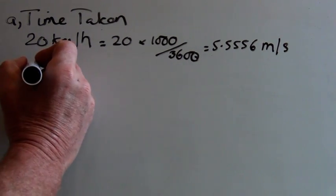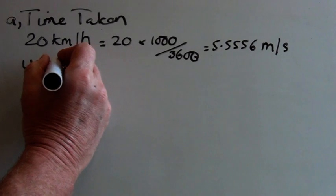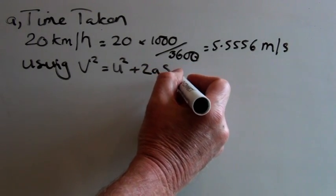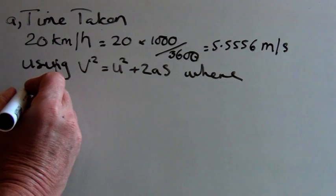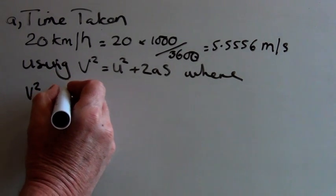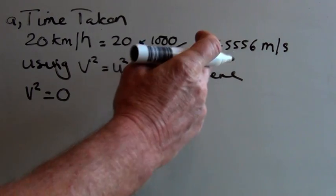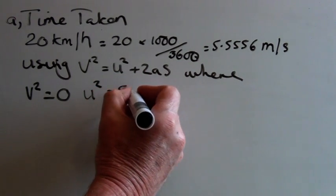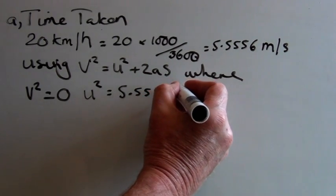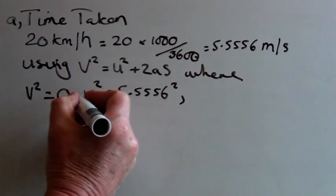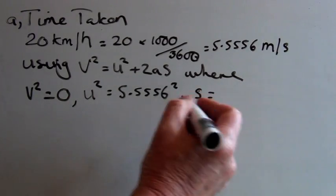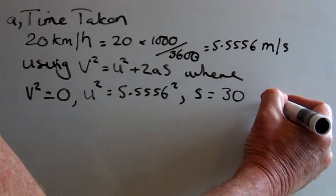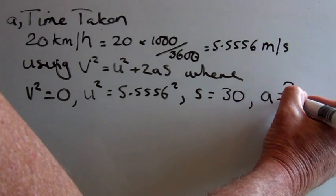Now using v squared equals u squared plus 2as, where v squared equals 0, u squared equals 5.5556 squared, s equals 30 the distance, and a is the acceleration which we don't know yet.